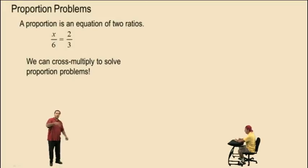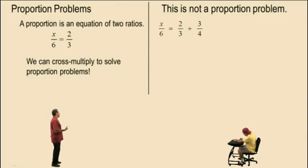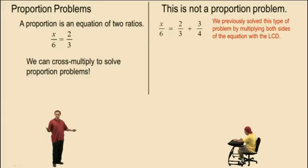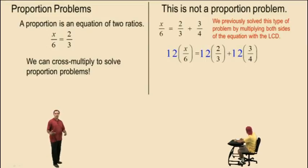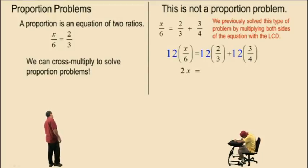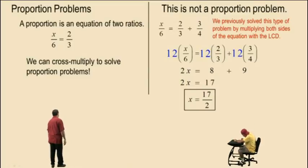We can cross multiply to solve proportion problems. Remember, this is not a proportion problem — this is a ratio equal to the sum of two ratios. We previously solved this type of problem by multiplying both sides of the equation with the LCD and kung-fu-ing the fraction. We used the LCD, which is 12, multiply both sides and distribute, so every term gets multiplied by 12. 12 divided by 6 is 2, 2 times x is 2x. 12 divided by 3 is 4, 4 times 2 is 8. 12 divided by 4 is 3, 3 times 3 is 9. Solving for x, we get 17 over 2. That's our final answer.